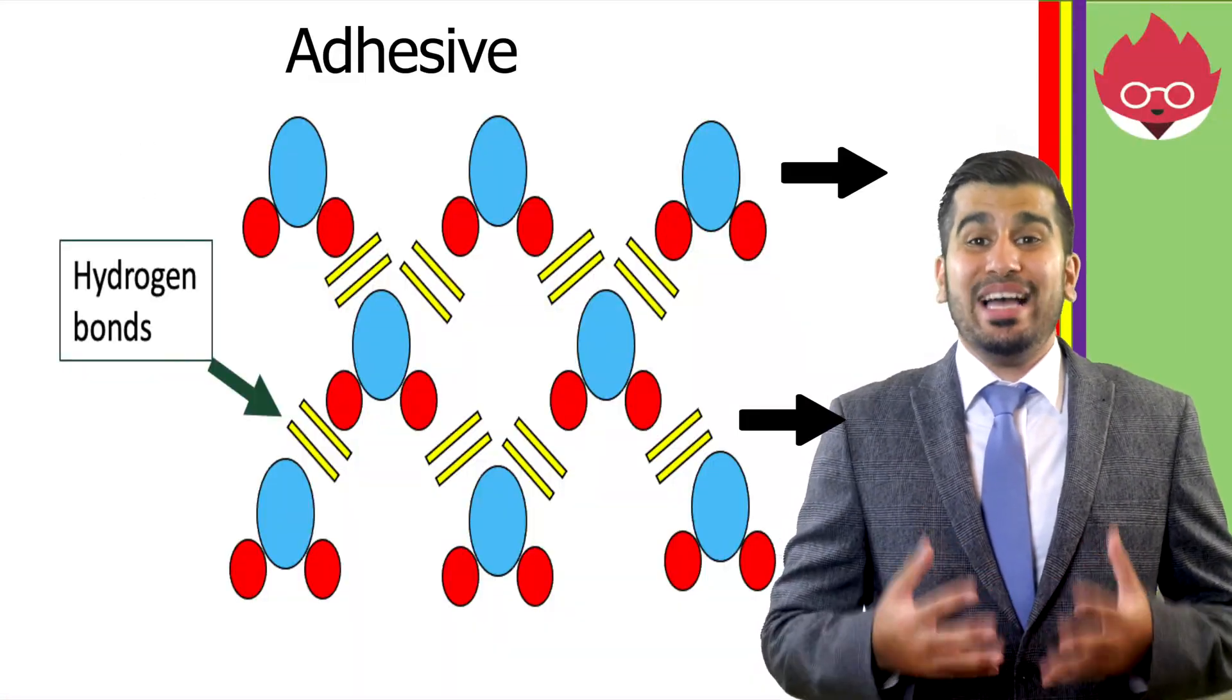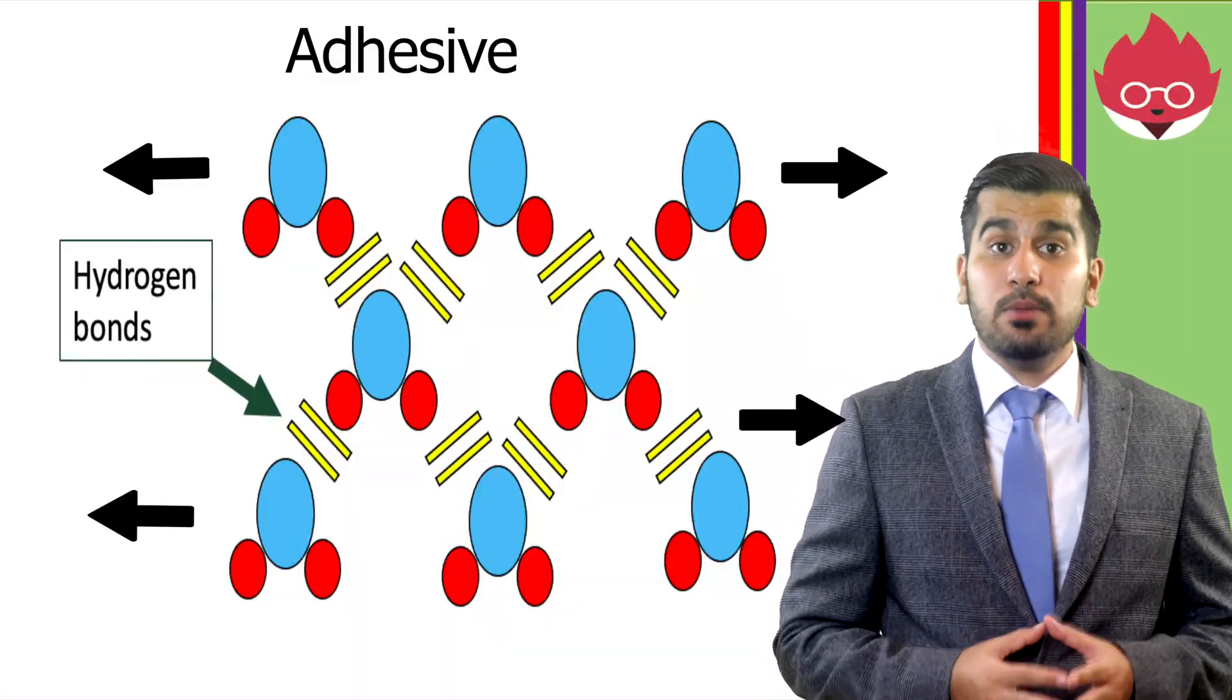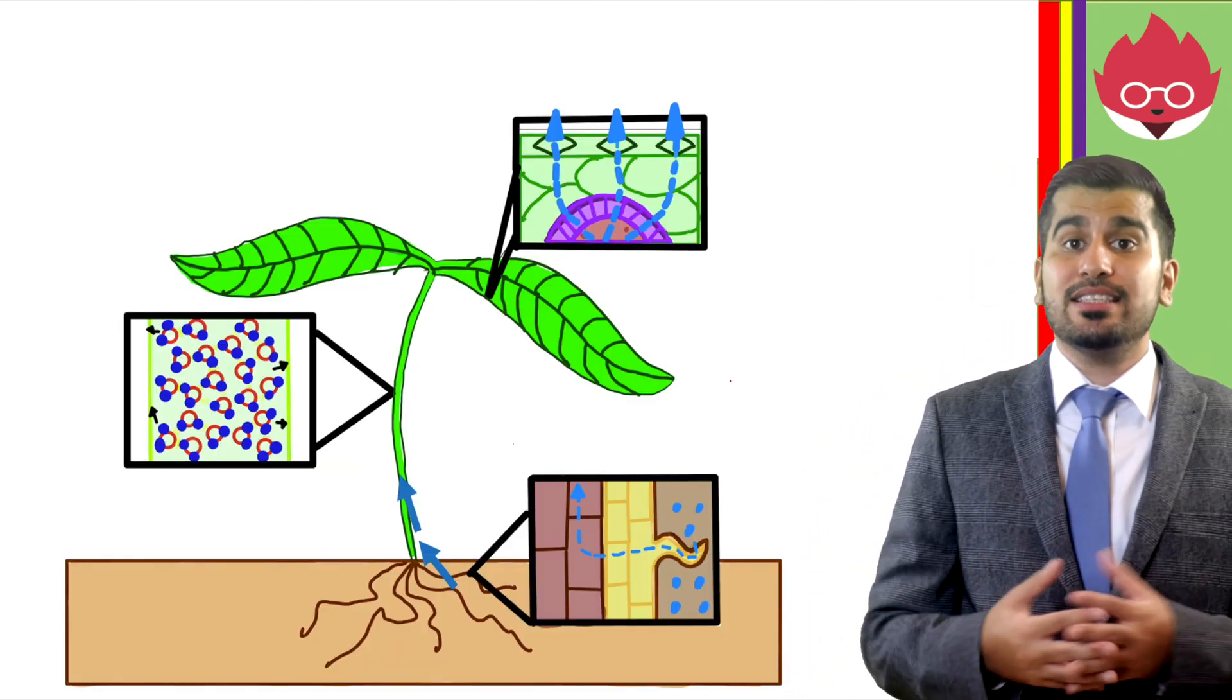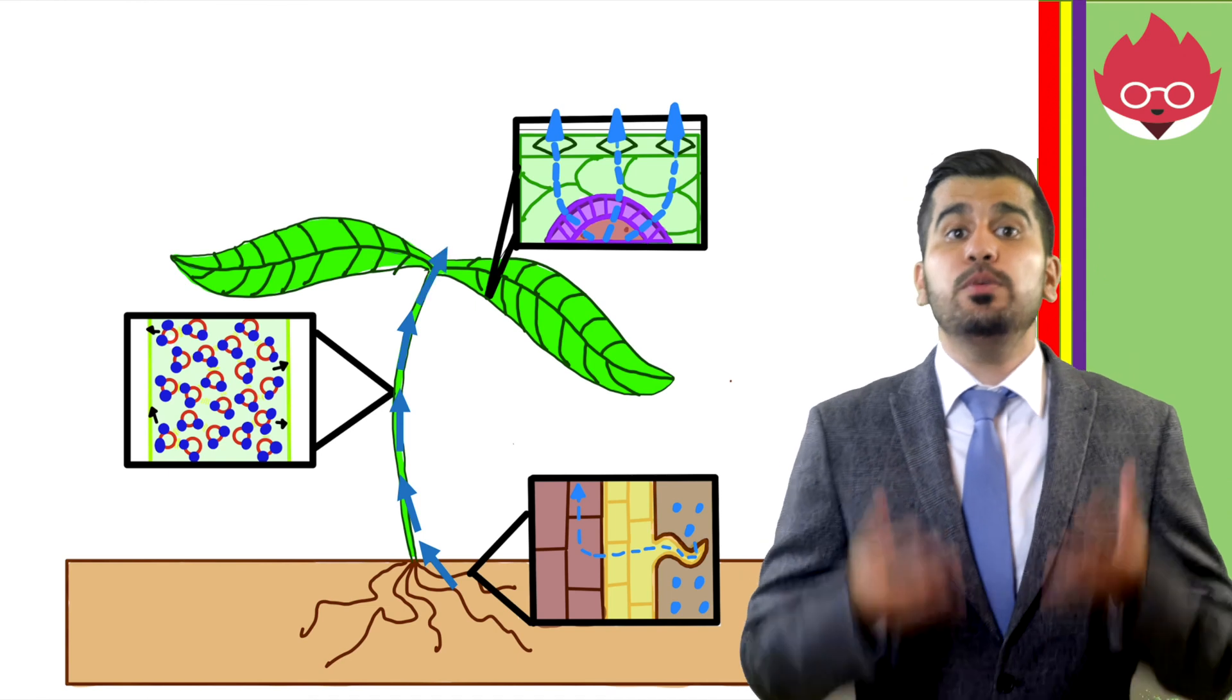Water molecules are also adhesive. They are attracted to other molecules. This is important in plants, as water is able to stick to the walls of the xylem, helping it move up the plant.